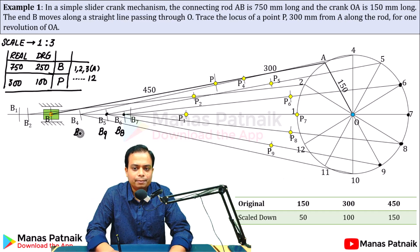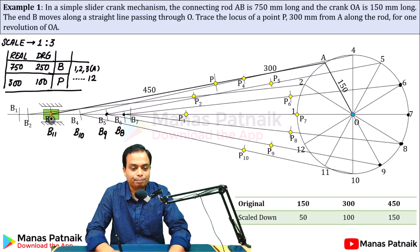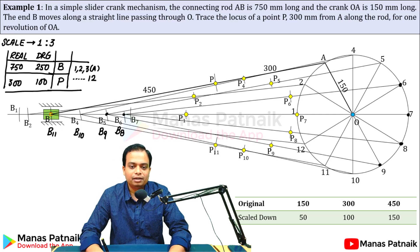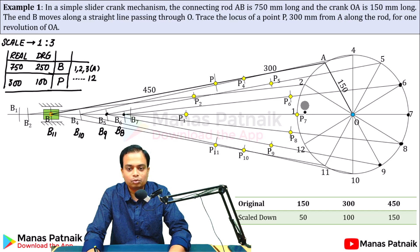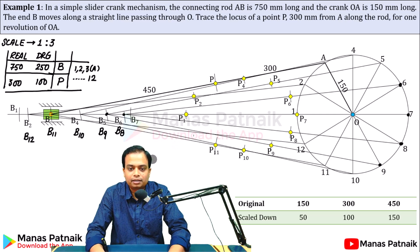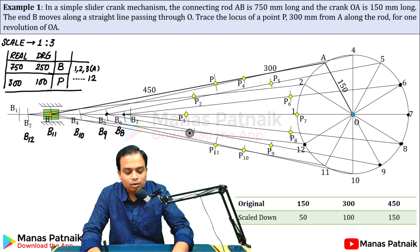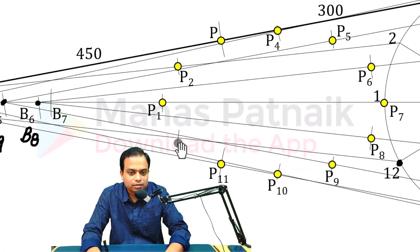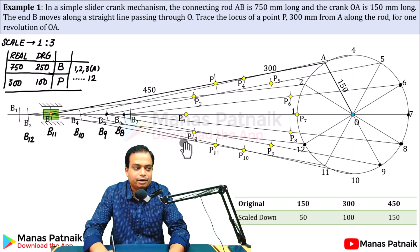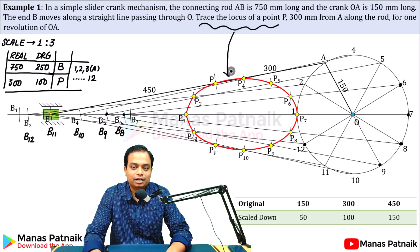For position 10: cut the arc to get B10. For position 11: B11 is going to coincide with B3. For position 12: it shares the same slider position as position 2, so B12 is located there. Cut the arc of 100 mm from 12 to get P12 — it is on the line slightly below the thicker one. You now have all the corresponding positions of point P.